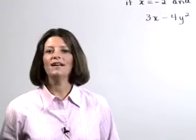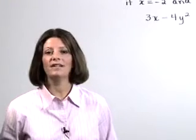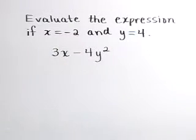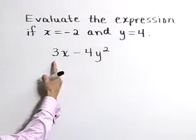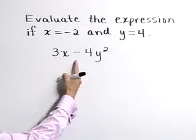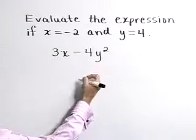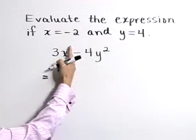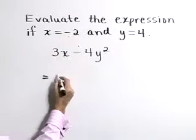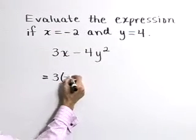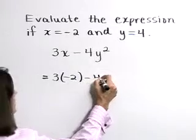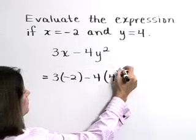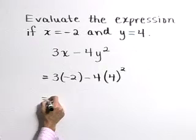Evaluate the expression if x is equal to negative 2 and y is equal to 4. We have the expression 3x minus 4y squared. Substituting in for x the value negative 2, and substituting in for y the value of 4, and then simplifying.